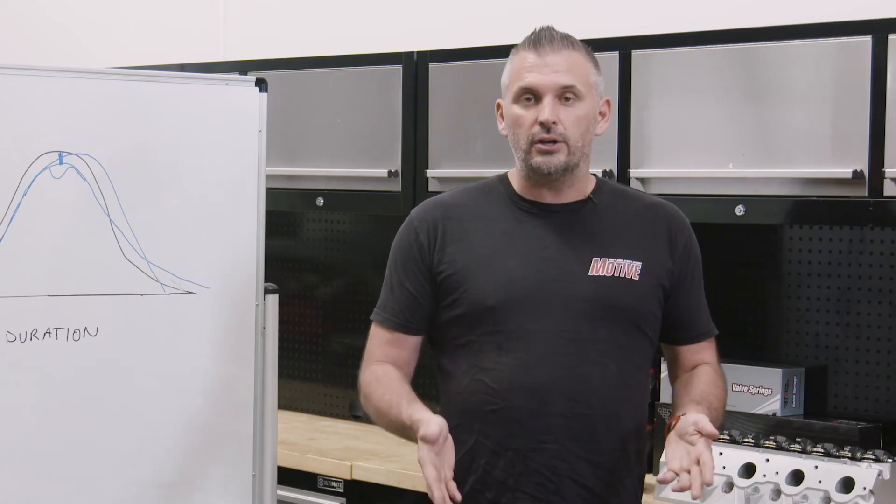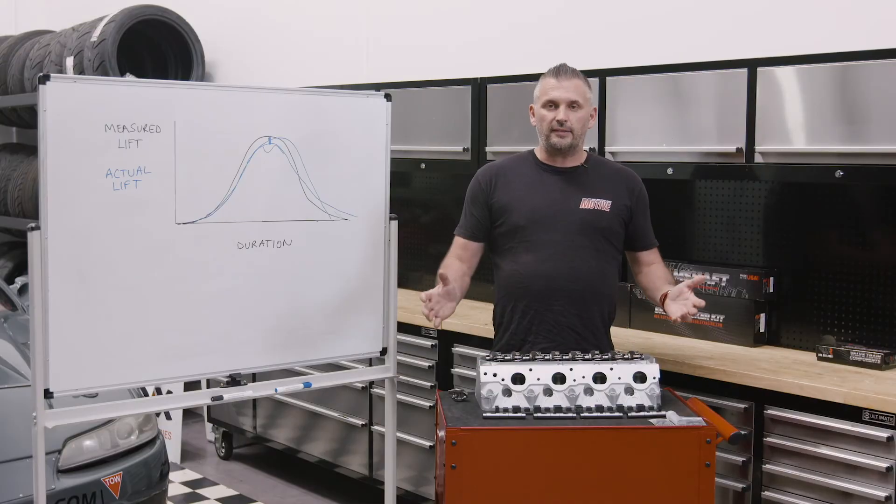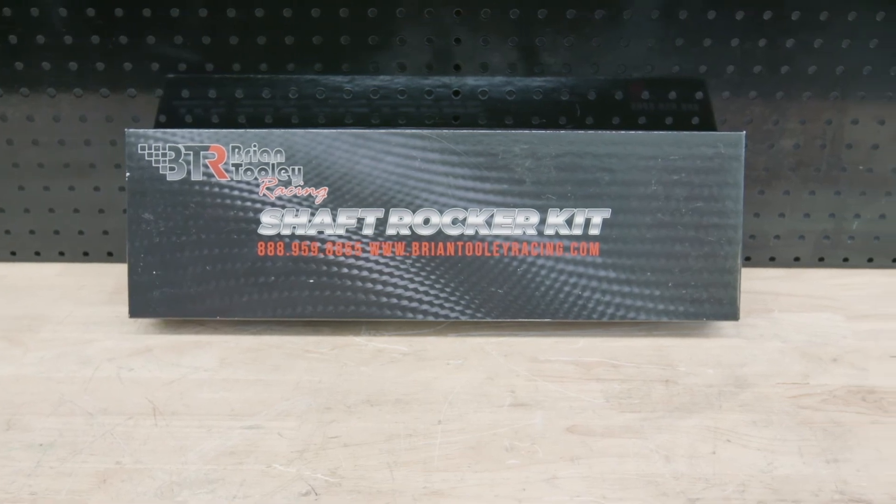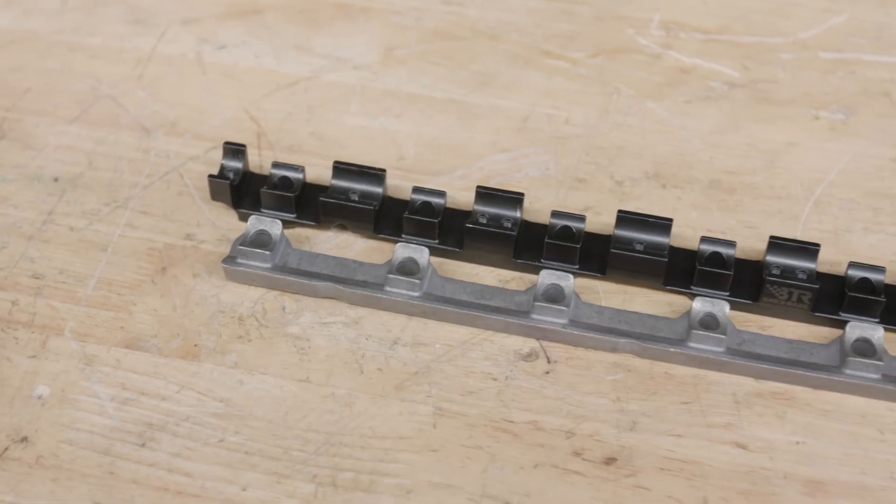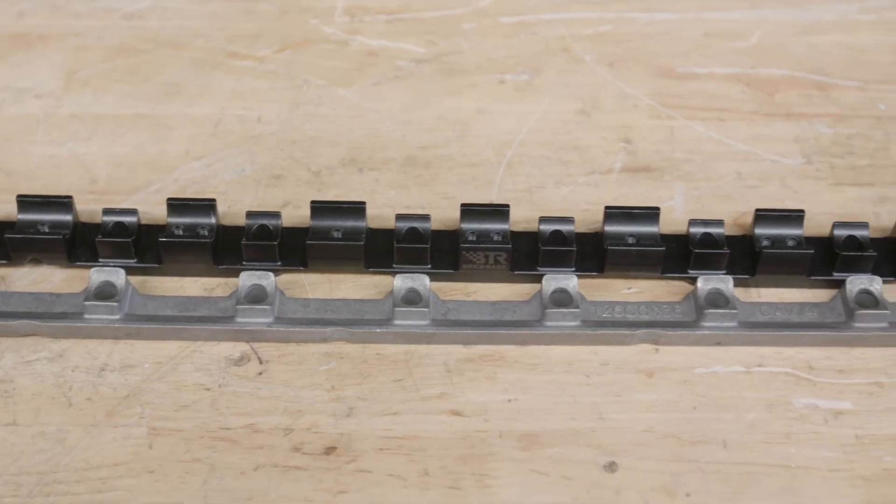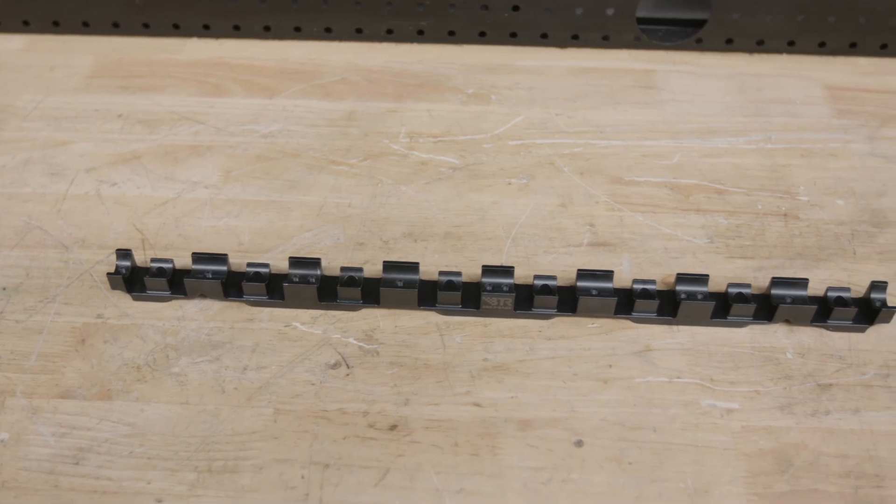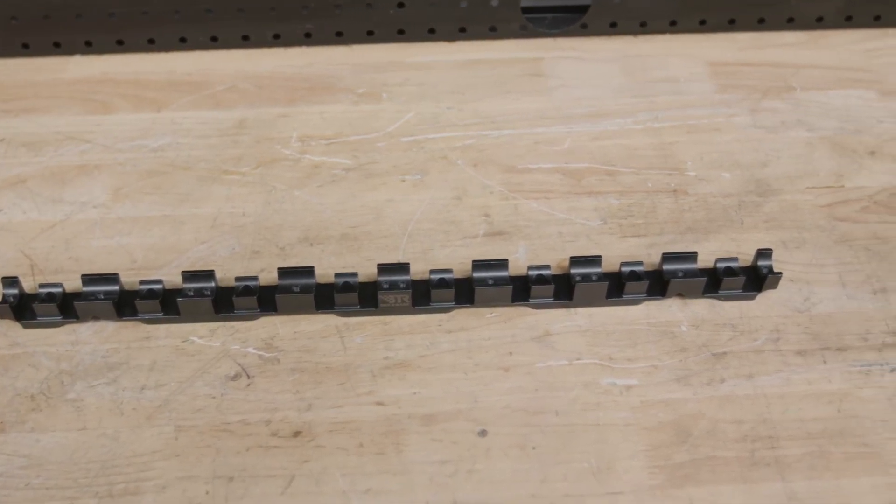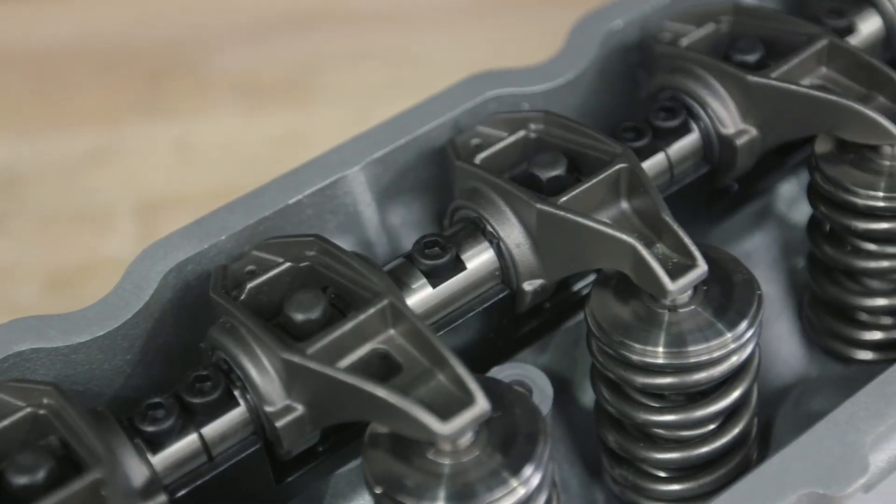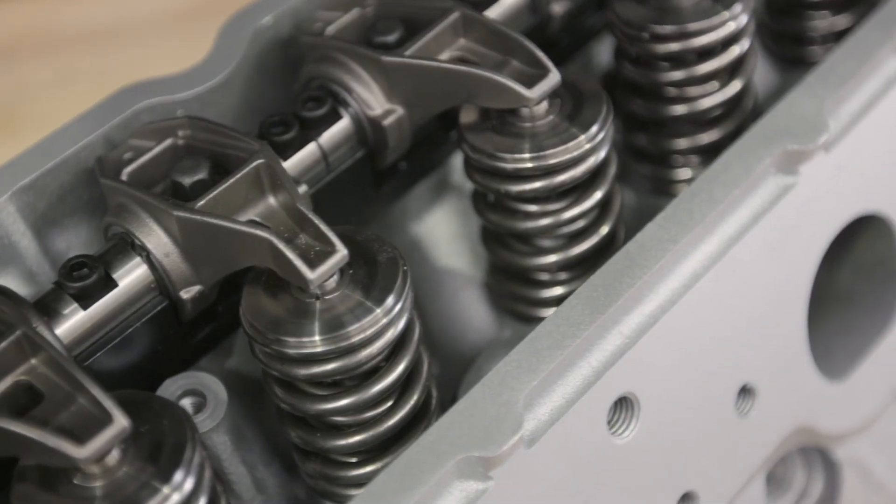This is the upgraded trunnion kit, but then we can go one step further again. The next step up is the Brian Tooley Racing Shaft Rocker Kit. Essentially, this gets rid of the factory rocker stand, which is pretty weak to be honest. And it replaces it with this, a billet steel rocker stand. Much stronger, much stiffer, so it doesn't bend and get deflection, which obviously then leads to other deflection in the valvetrain. And most importantly, it actually changes the style of trunnion and has more bolts to hold them all in.